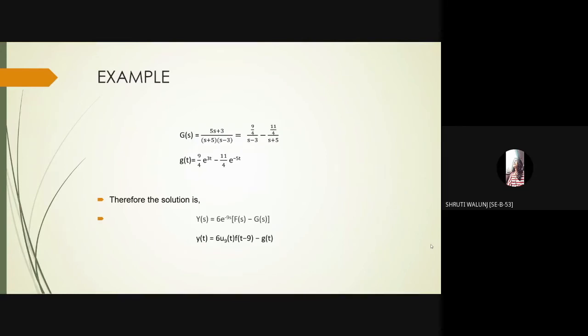Further, g of s is equal to 5s plus 3 upon s plus 5 into s minus 3 is equal to 9 upon 4 upon s minus 3 minus 11 upon 4 upon s plus 5, and g of t is equal to 9 upon 4 into e raised to 3t minus 11 upon 4 into e raised to minus 5t.